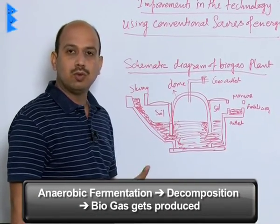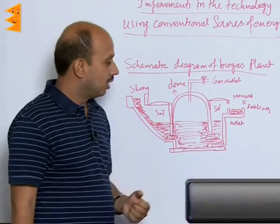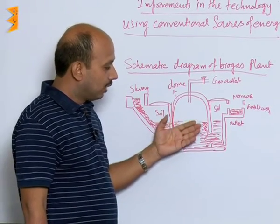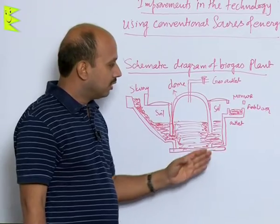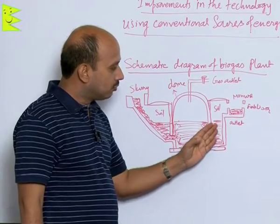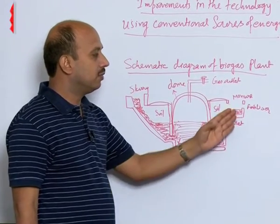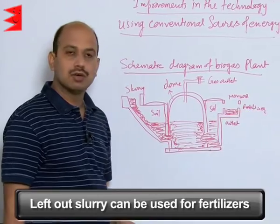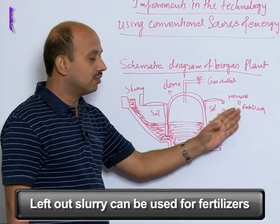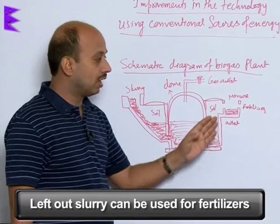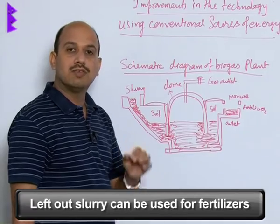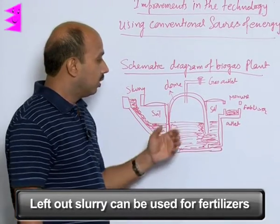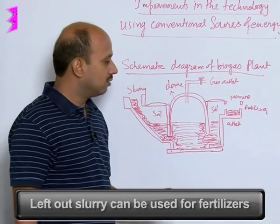The gas produced is known as biogas. Whatever slurry is left behind comes out from this side and can be used as manure or fertilizer. This left-behind slurry is rich in nitrogen and phosphorus and is very good manure, so it can be used as a fertilizer.